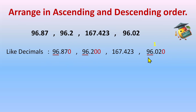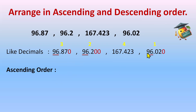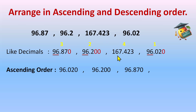So 96.020 is written first. Next, comparing the remaining numbers: the tenth place digits are 8 and 2, so 96.200 is second. Then 96.870 is third, and 167.423 takes the fourth position.